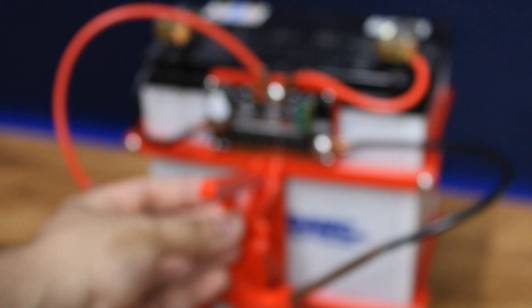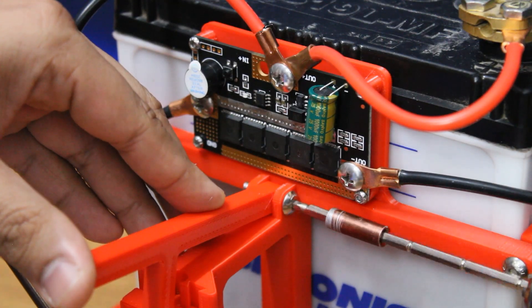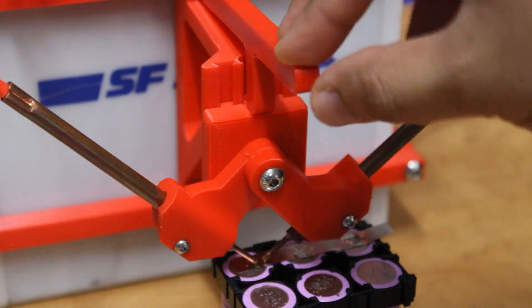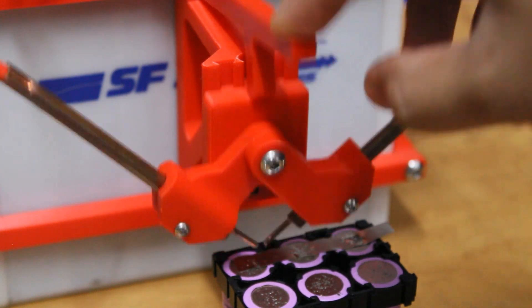Attach the lever using M5 screw. And now the spot welder is ready for use.